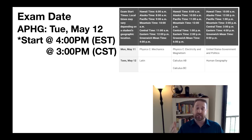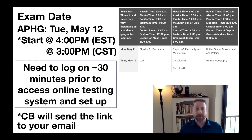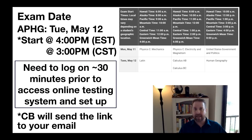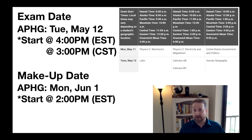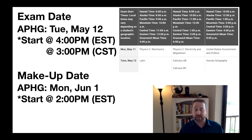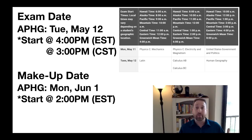You will need to log on around half an hour prior to the start to access the online testing system and set yourself up. College Board will send the link to your email, so do not be late. There will be a lot of nerves on that day, so be early and be prepared. If you can't make the main date, there is a make-up date: Monday, June 1st, starting around 2 p.m. Eastern Standard Time. College Board should also have a simulated online testing site available sometime in late April or early May.